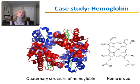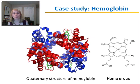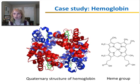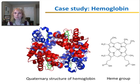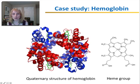Here's another example of protein structure and function. This deals with the protein hemoglobin, which is found in your red blood cells. It transports oxygen throughout your body. Hemoglobin is an example of a protein that has quaternary structure. It is made up of more than one polypeptide.